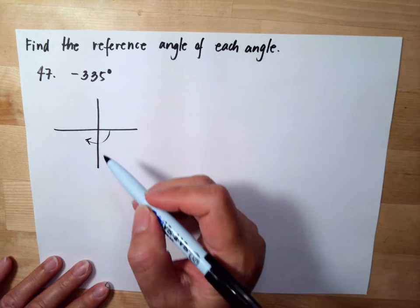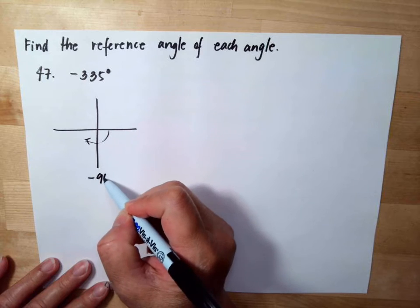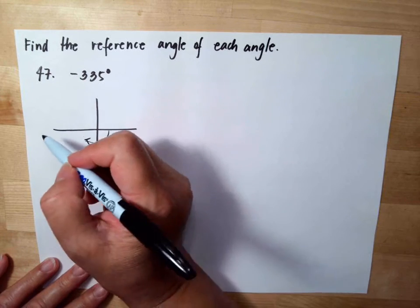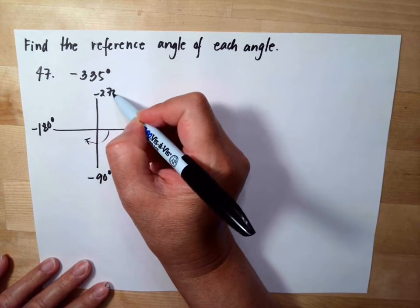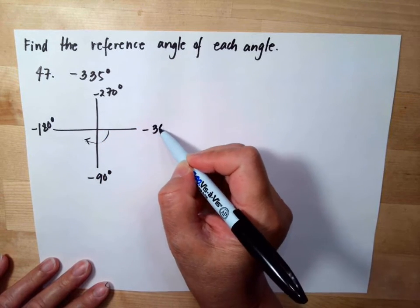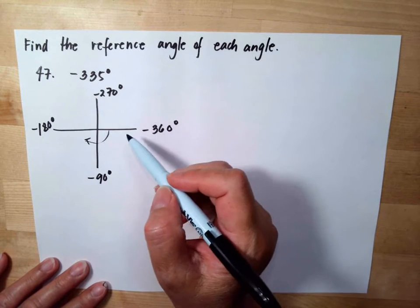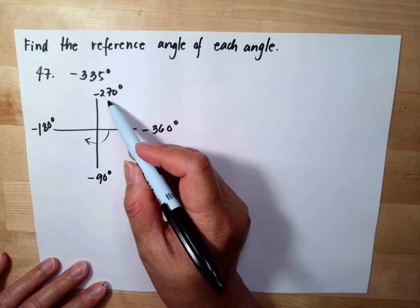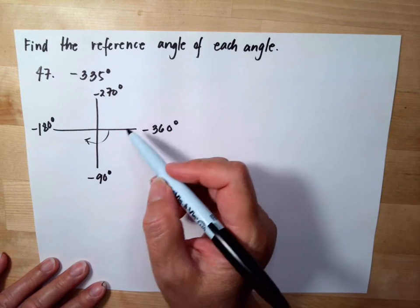So this will be negative 90 degrees, negative 180 degrees, negative 270 degrees, and this is negative 360 degrees. So negative 335 degrees is between negative 270 and negative 360 degrees, so meaning it ends in this point.